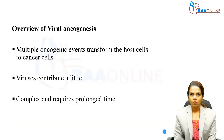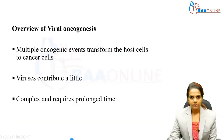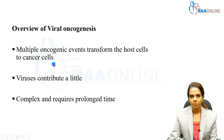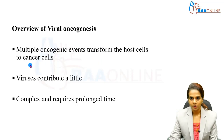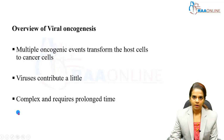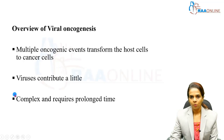Moving on to the overview of viral oncogenesis: there are multiple oncogenic events that transform normal host cells into abnormal cancer cells. This is a complex, multi-step process that requires a prolonged time for oncogenicity to develop, and the viruses contribute a little.